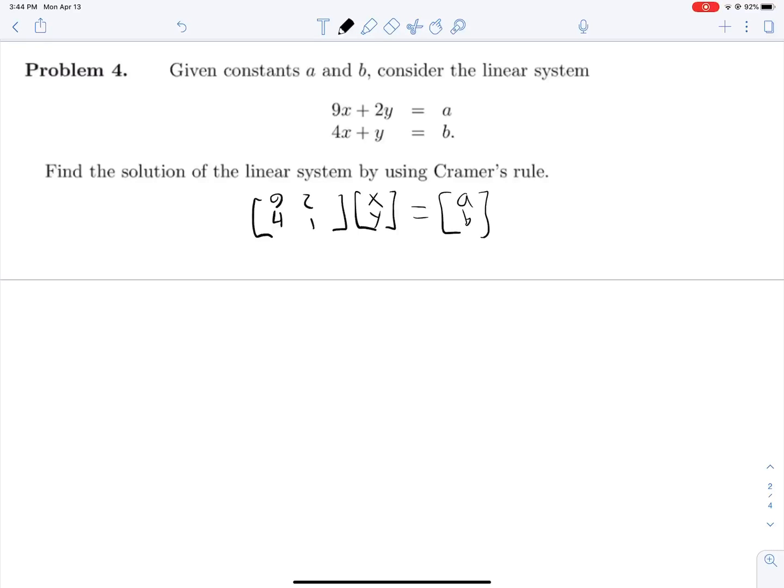9421 times the vector XY equals AB. And now solving we will see that X is equal to the determinant of the matrix with the X column replaced with AB. So AB21 all divided by the determinant of 9421. That's just 9 minus 8, so 1.